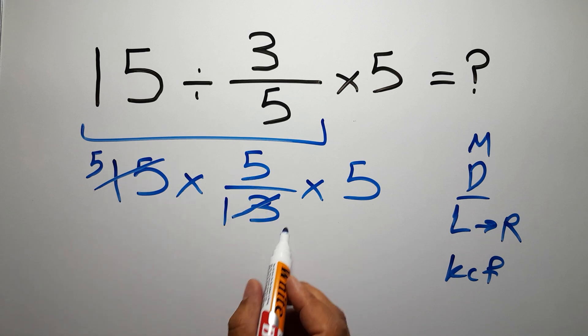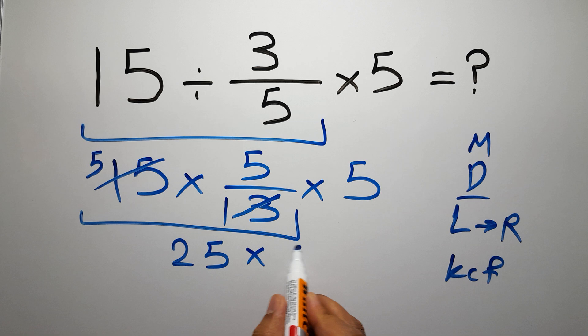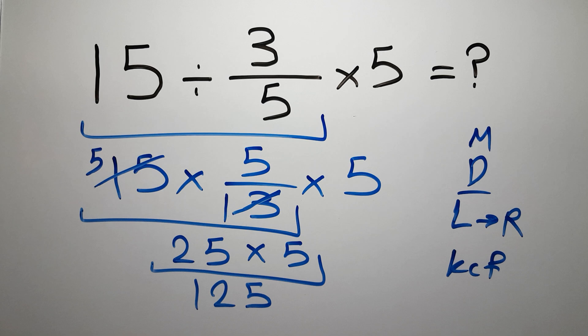5 times 5 gives us 25, and 25 times 5 is just 125. The correct answer is 125, and this is our final answer to this problem.